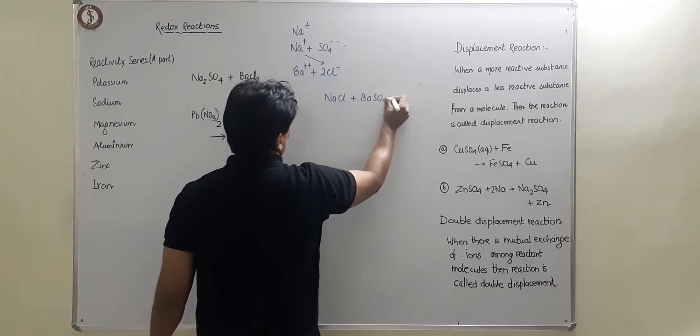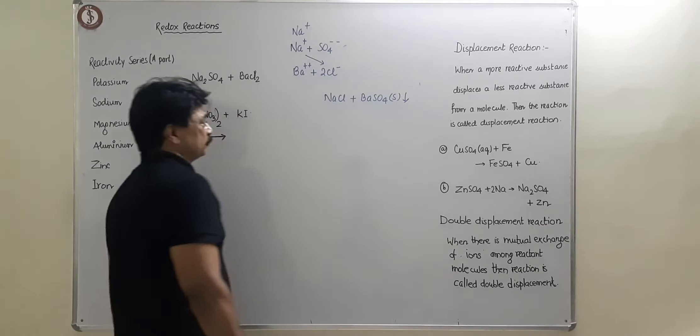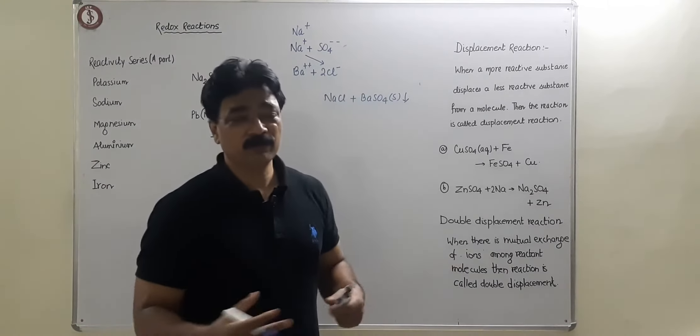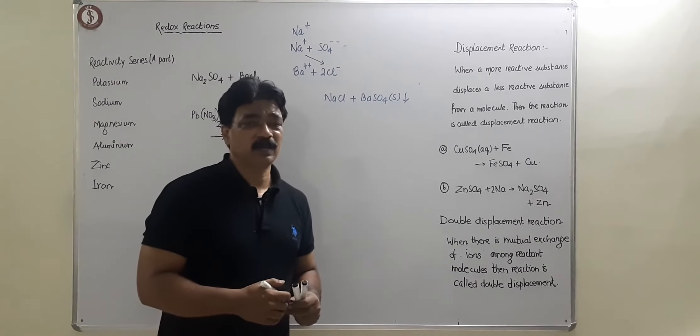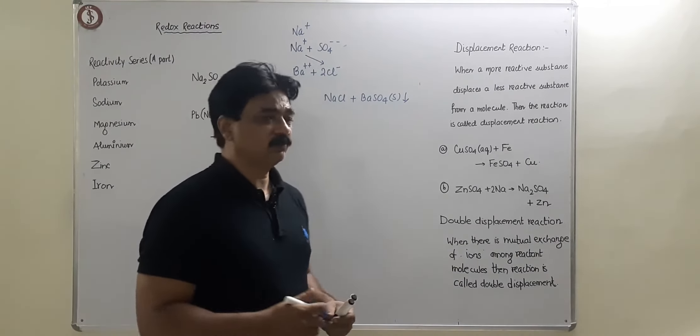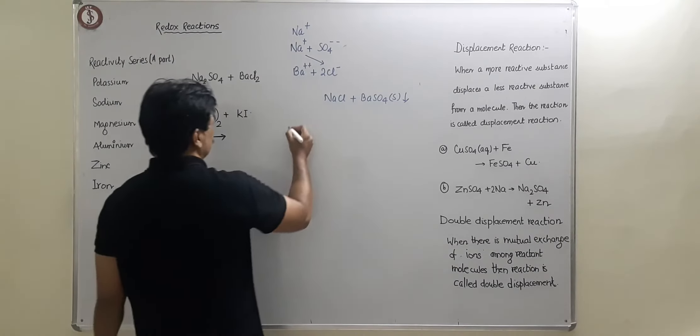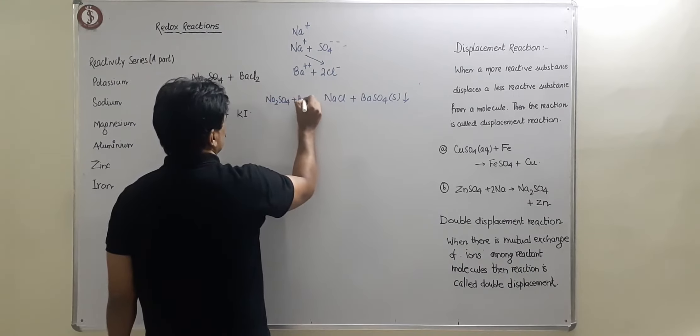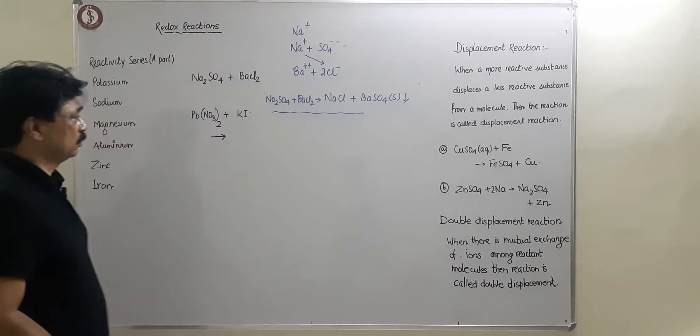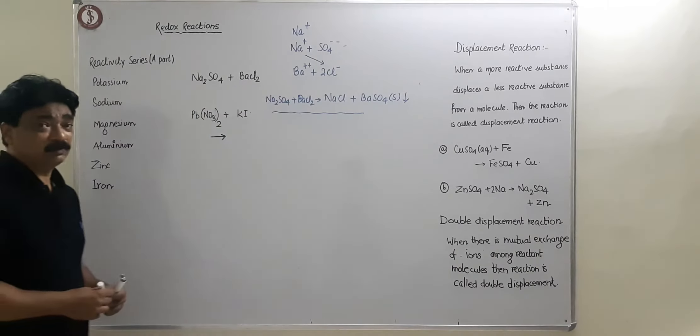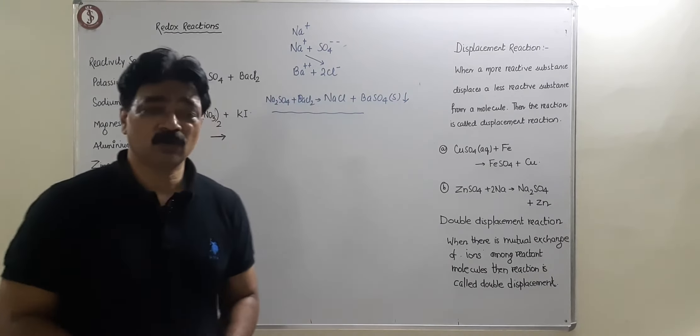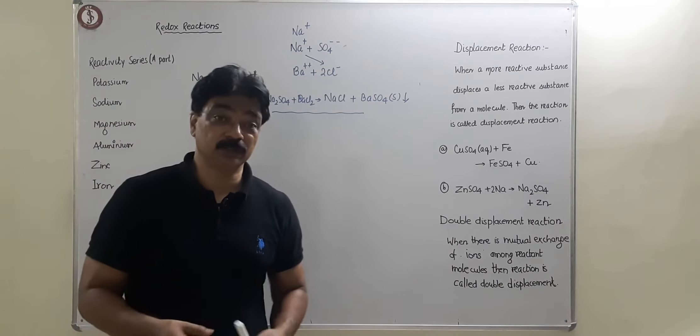And BaSO4 will be formed. Barium sulfate is a solid, so it will go down as a precipitate. First what happens? The solution breaks up into ions, then the ions have the preferred choice which ion will react with which ion. There will be a mutual exchange like that means Na2SO4 plus BaCl2 will undergo a chemical change and form NaCl plus BaSO4. So double displacement reaction means mutual exchange of radicals and it is also precipitation reaction.